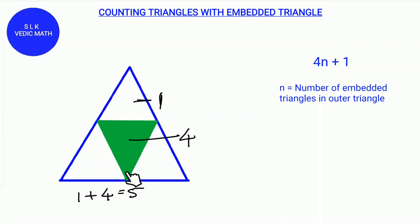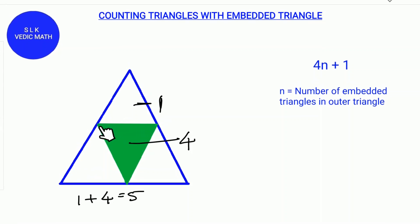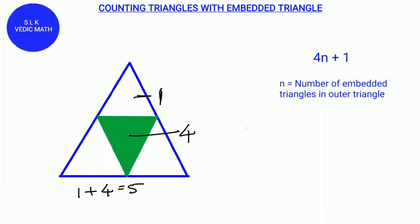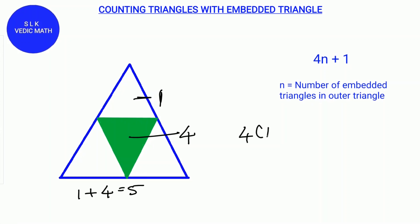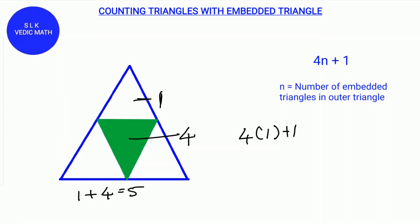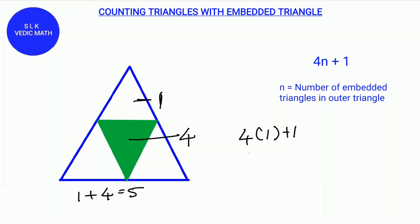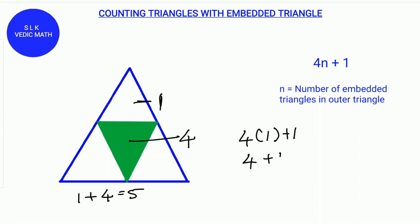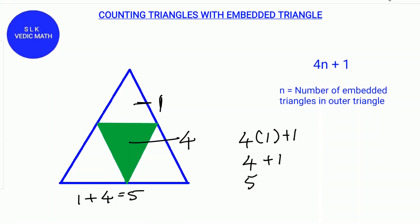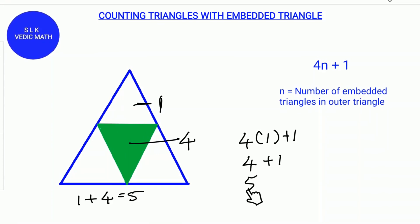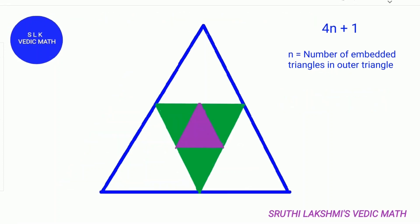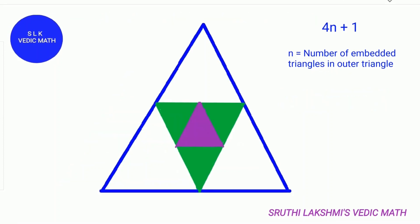There is one Embedded Triangle, so we do 4 times 1 plus 1. 4 times 1 is 4, and 4 plus 1 is 5. So there are 5 triangles in this figure.